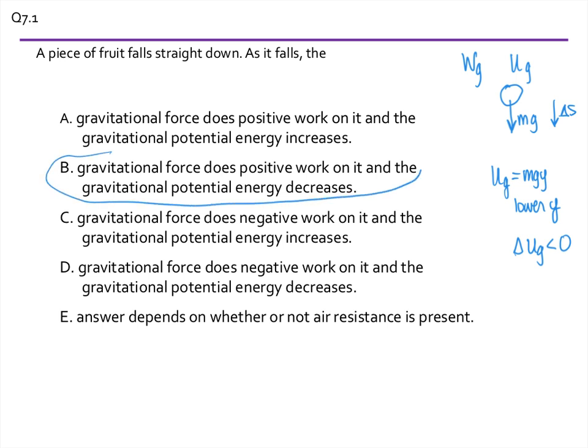So the gravitational force will do positive work and the gravitational potential energy will decrease. This is all self-consistent because in a sense, the gravitational potential energy was the stored energy that will allow the gravity to do the work. So it will go down as the work is done.